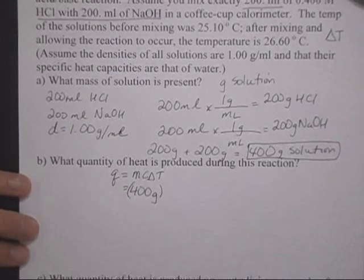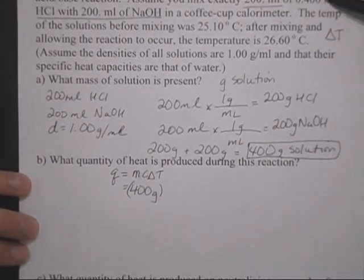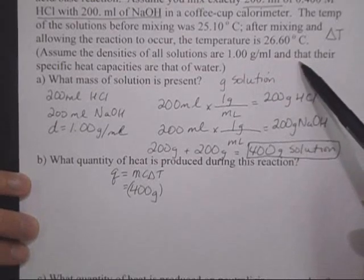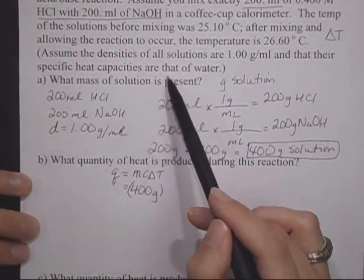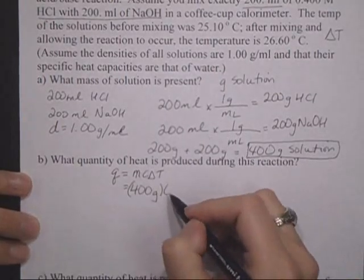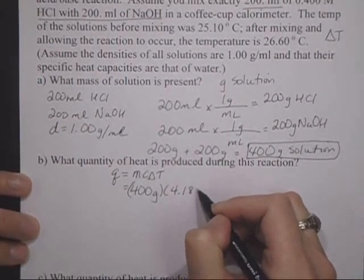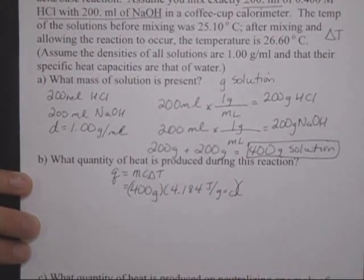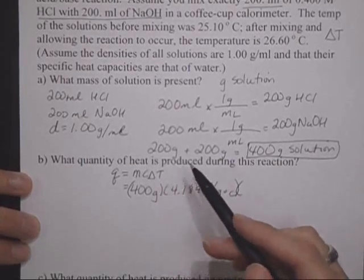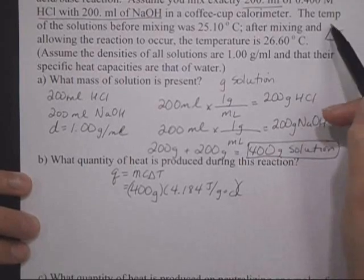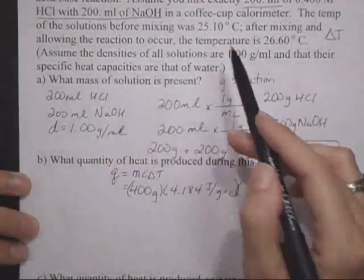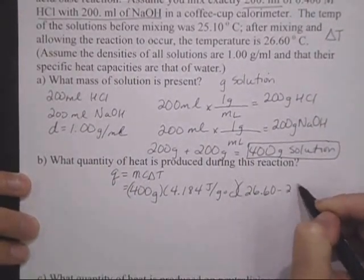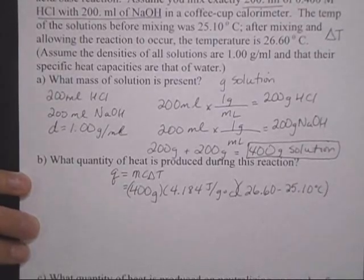C, I'm going to go back up in here and read again. Volume, concentration, volume, temperature, temperature, density, and that their specific heat capacities are that of water. There it is. So if the specific heat capacity is the same as that of water, that's 4.184 joules per gram degree Celsius. And then finally my delta T would be T final minus T initial. Go back up to my beginning. The temperature of the solutions before mixing was 25.1 and after was 26.6. So there's my delta T.